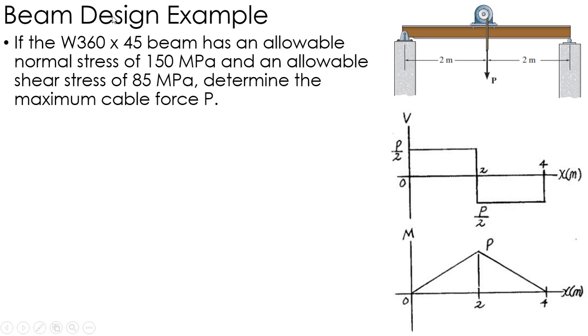Once I know those, I look up what this beam exactly is. From the appendix, I can see that the section modulus is 0.688 times 10^-3 meters cubed, the depth is 352 millimeters, and the thickness of the web is 6.86 millimeters. We'll talk about how we use all these.